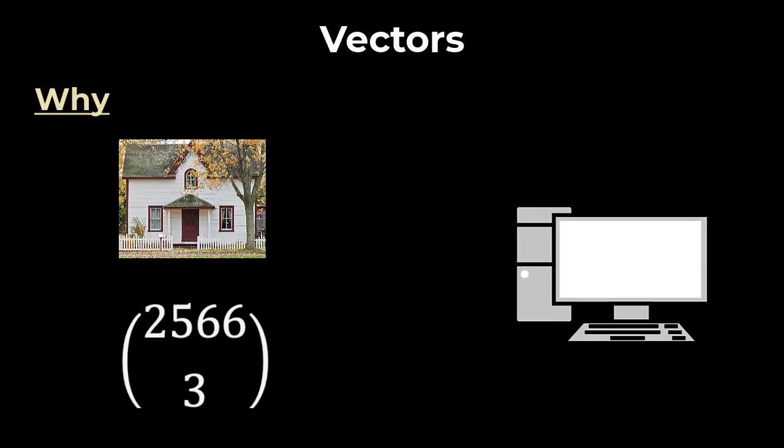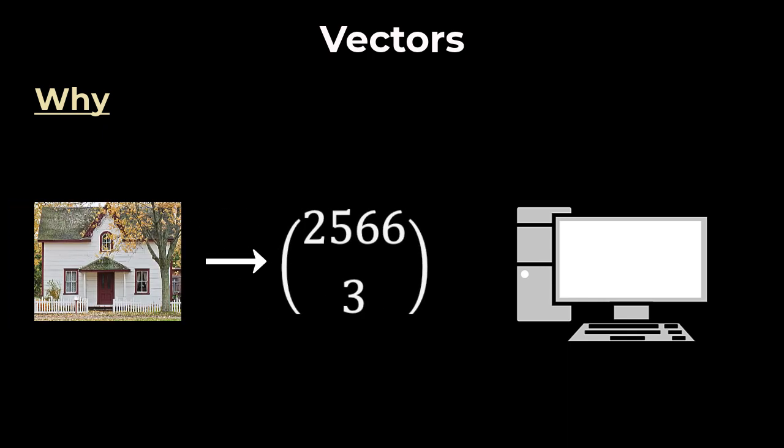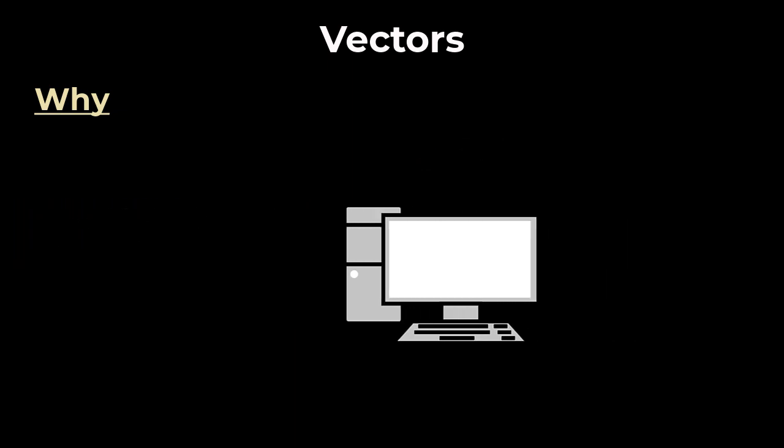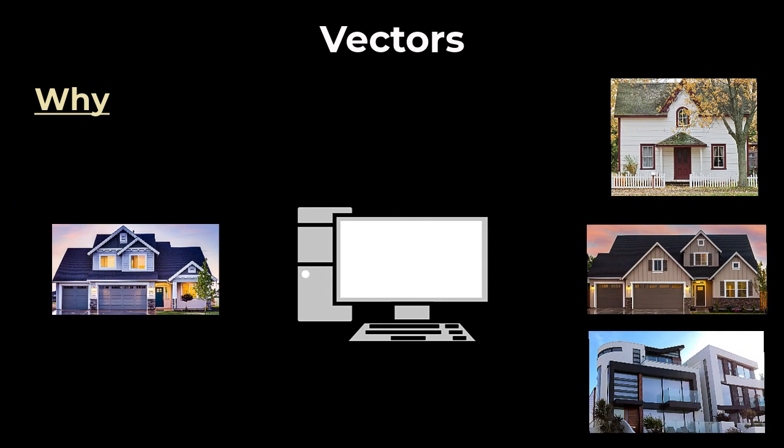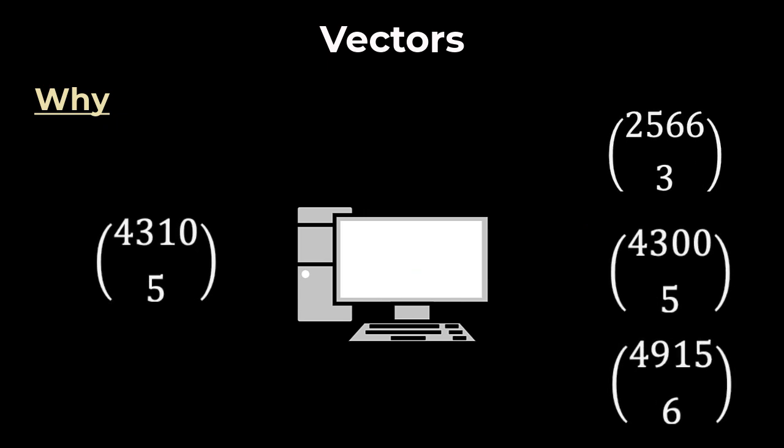Now, why do we need vectors? Computers don't understand real-world objects, but they understand numbers. So if we convert objects, like a house, into numbers, then a computer will be able to understand it, and it paves way for using computers in a lot of real-world applications. For example, here's a house and here are some other houses. Which of these houses is similar to the main one? It might be easy for you to tell, but a computer cannot process this information as is. So we represent each house as a two-dimensional vector, the first number being the square footage, the second number is the number of bedrooms, and a computer can now determine which house is most similar by running simple distance calculations.